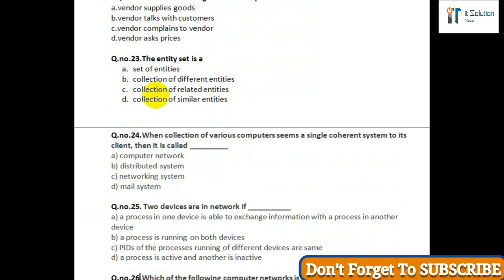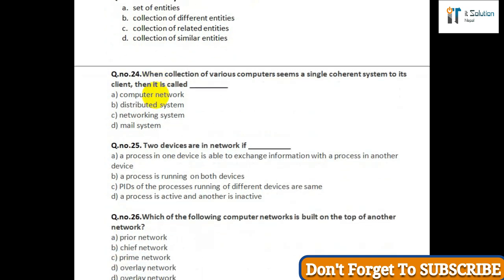Question number twenty-five: Two devices are in a network if — option A: a process in one device is able to exchange information with a process in another device; option B: a process is running on both devices; option C: the PIDs of the processes running on different devices are the same; option D: one process is active and another is inactive. Question number twenty-six: Which of the following computer networks is built on top of another network — option A: priority network; option B: shift network; option C: prime network; option D: overlay network.